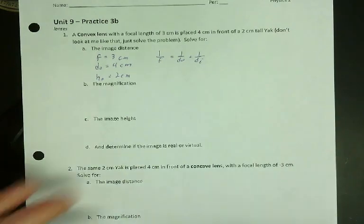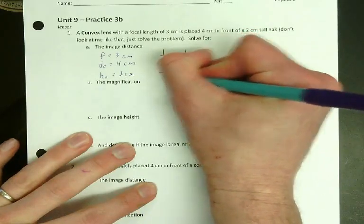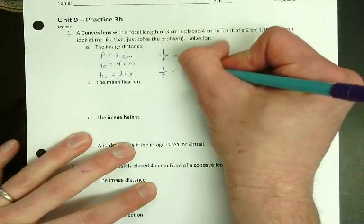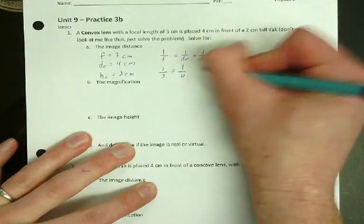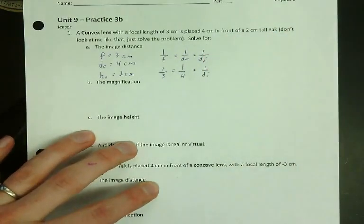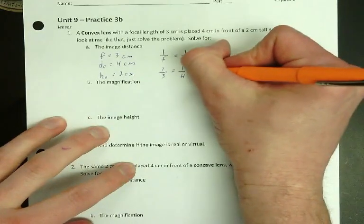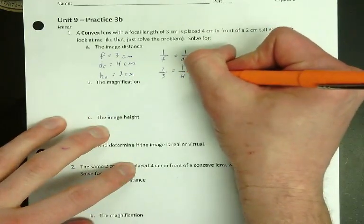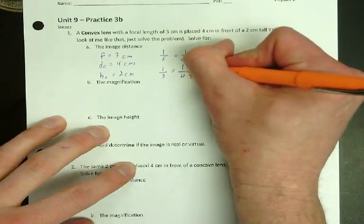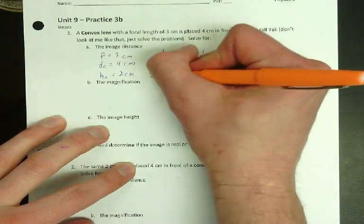So now we put the numbers in. So we got 1 over F, so 1 over 3 equals 1 over 4 plus 1 over DI. I'm going to need common denominators unless I'm turning into decimals, which is fine. Common denominator is going to be 12, so multiply this one by 3 over 3, multiply this one by 4 over 4.